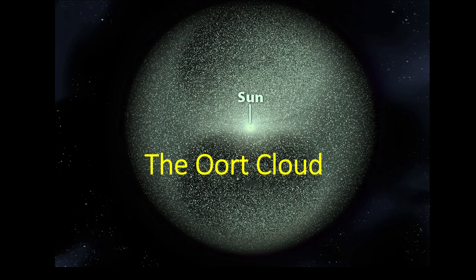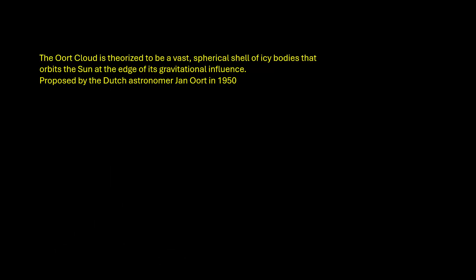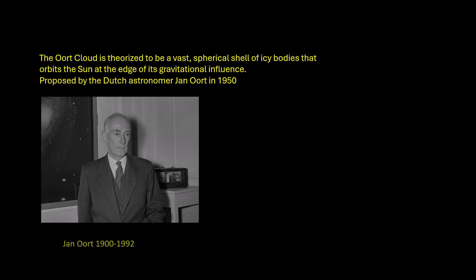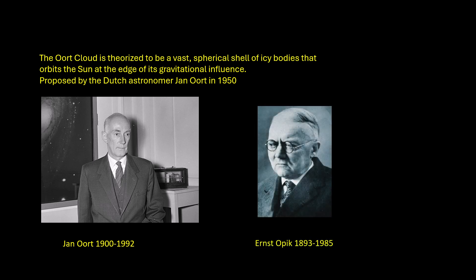Welcome to this video about the Oort cloud. It's theorised to be a vast cloud of icy bodies at the very edge of the solar system, first proposed by the Dutch astronomer Jan Oort back in 1950, but the idea was postulated by the Estonian astronomer Ernst Opik 20 years earlier, back in 1931. Oort was, however, unaware of Opik's earlier work, and today we call the object the Oort cloud.